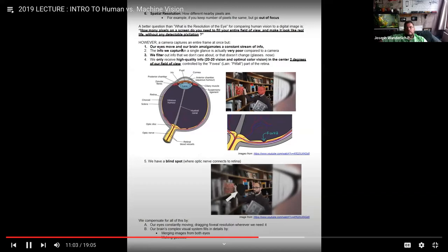How many pixels on a screen do you need to fill your entire field of view and make it look like real life without detectable pixelation? Digital image processing, you just assume you're capturing a uniform pixel density over the whole thing. But when you are a human looking at something, we do it differently. A camera captures an entire frame at once, but our eyes move and our brain amalgamates a constant stream of info. The info we capture in a single glance is actually very poor compared to the camera.